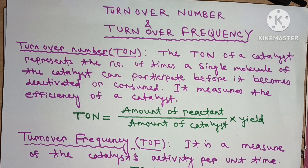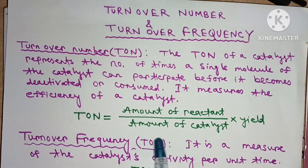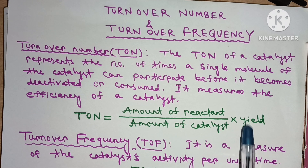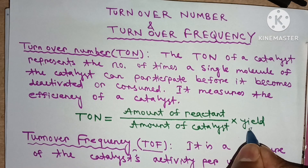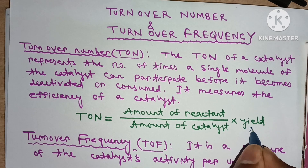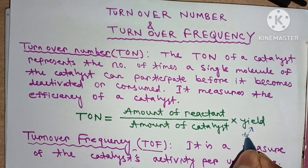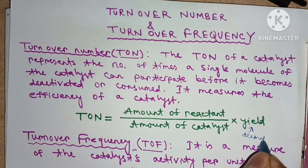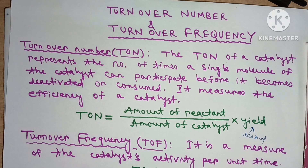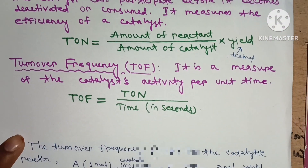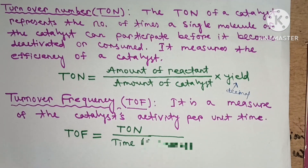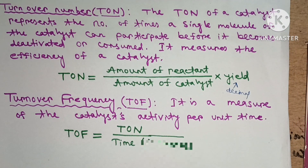The formula for turnover number is: amount of reactant divided by amount of catalyst, multiplied by yield. The yield should be expressed as a decimal.